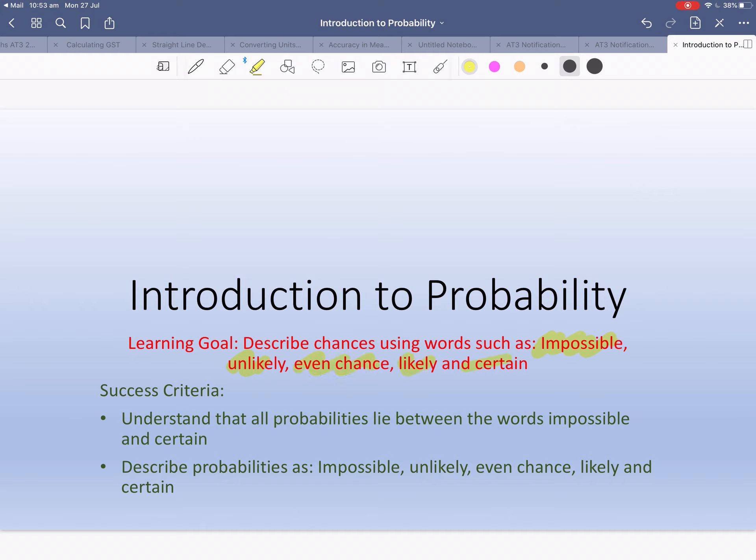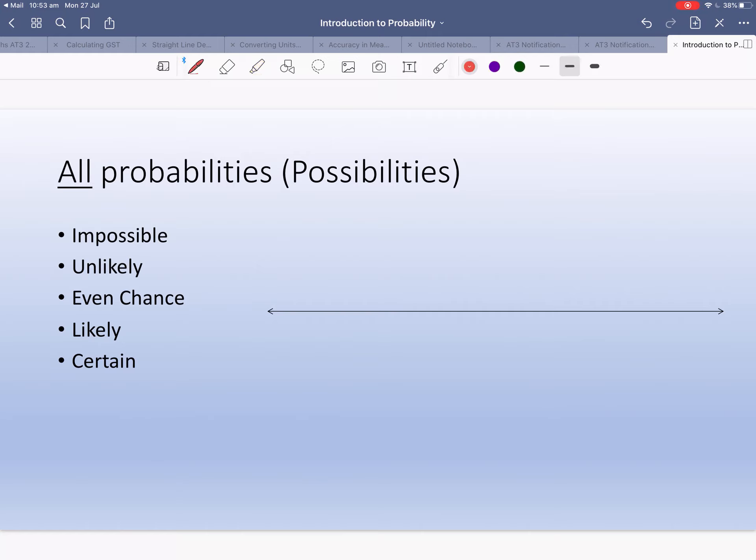Understand that all probabilities lie between the words impossible and certain. Some things are impossible - that's the lowest you can get. Some things are certain.